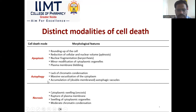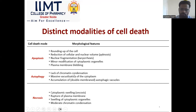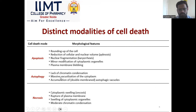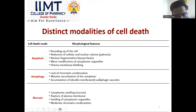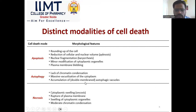Now we discuss autophagy. In autophagy, there is a lack of chromatin condensation — no chromatin condensation. There is massive vacuolization. This double membrane structure gets accumulated and autophagy happens.